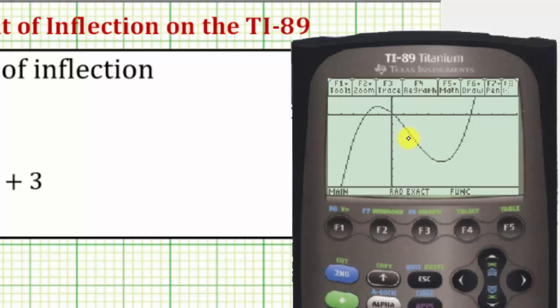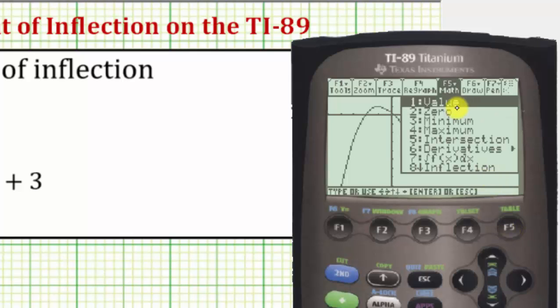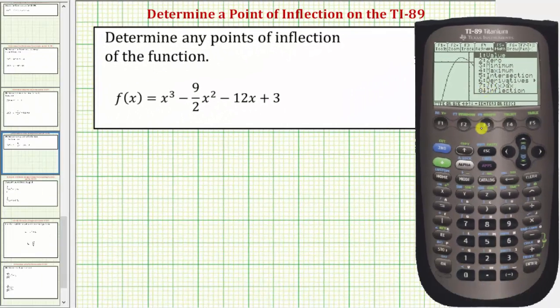To determine that point of inflection, we press F5 for math. Notice how option 8 is inflection, which is what we use to determine the point of inflection. We can arrow down to 8 and press enter, or just press the number 8.